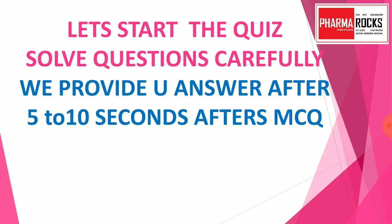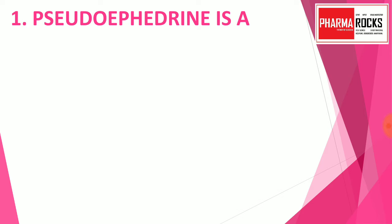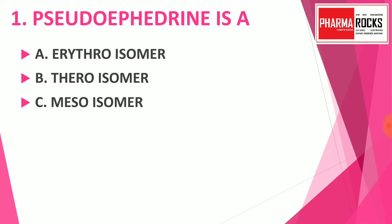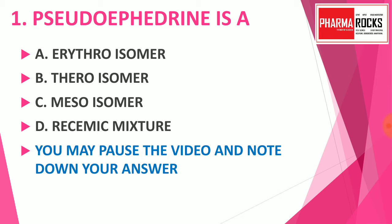Here we begin the Pharma Quiz. Solve the questions carefully. We provide the answer after 5 to 10 seconds. Question number 1: Pseudoephedrine is — option A: erythro isomer, option B: threo isomer, option C: meso isomer, option D: racemic mixture. You may pause the video and note down your answer. The correct answer is option C: meso isomer. So pseudoephedrine is a meso isomer.